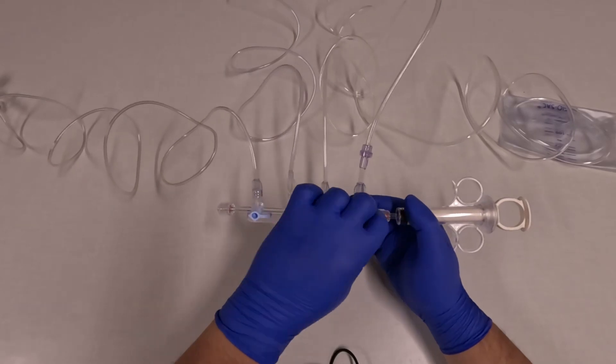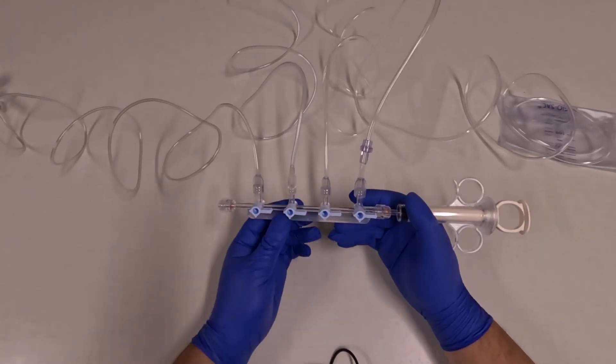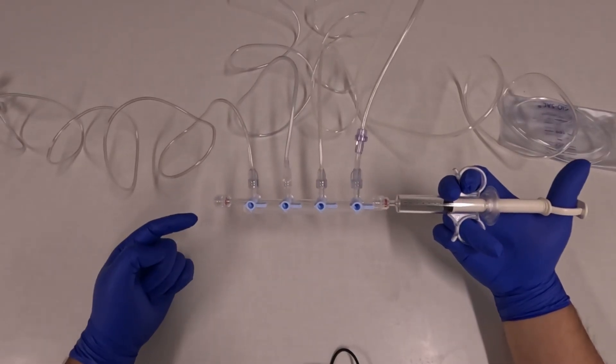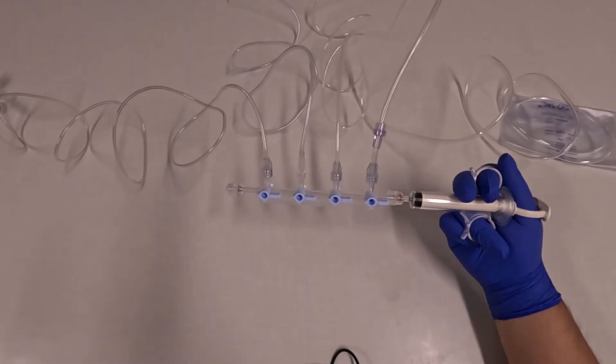You can see here I turn all the stopcocks so that there's a solid path from the patient to the syringe. If I were to pull back here, blood would enter from the patient into the syringe or push back from the syringe back to the patient.